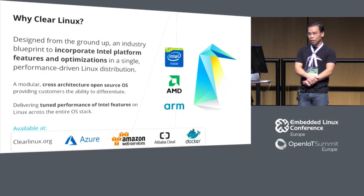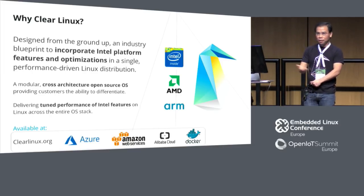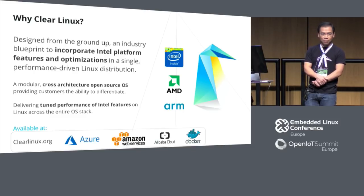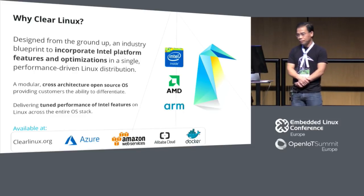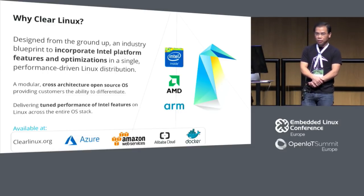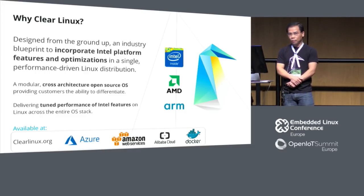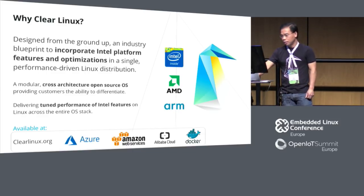That said, Clear Linux does run on AMD and also on ARM as well. Intel has FPGA hardware solutions and it runs on FPGA for sure. Clear Linux is available on our website at clearlinux.org, on cloud solutions such as Azure, AWS, and Google, and there's also Docker as well.